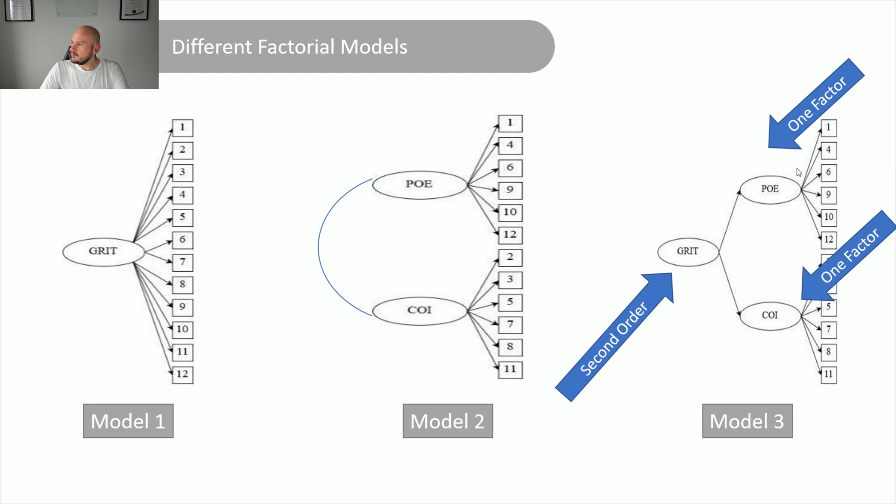And finally, we've got the second order factor, which is basically the first order two-factor model. So this model, but we have a third latent factor leading up to it. And that path is constrained to one.